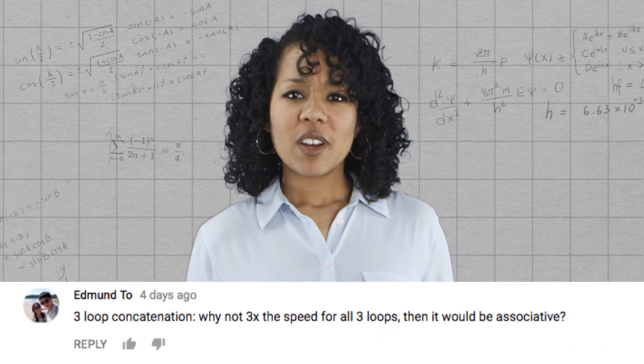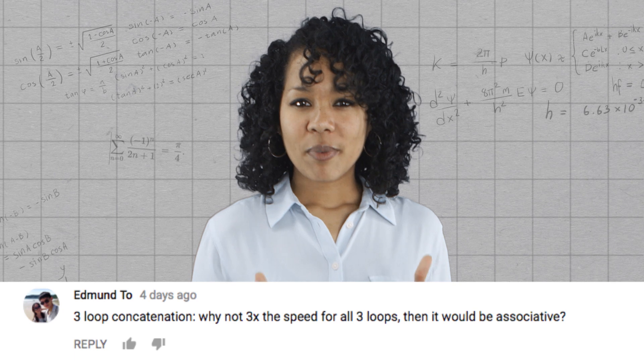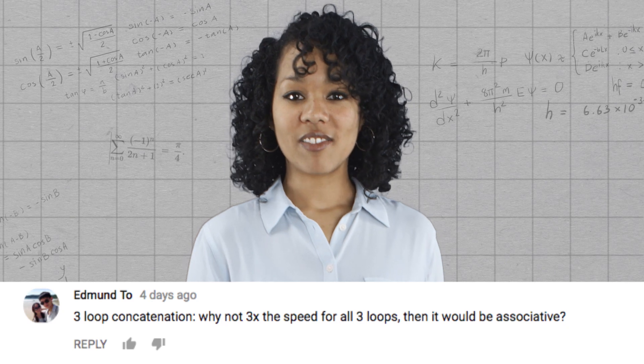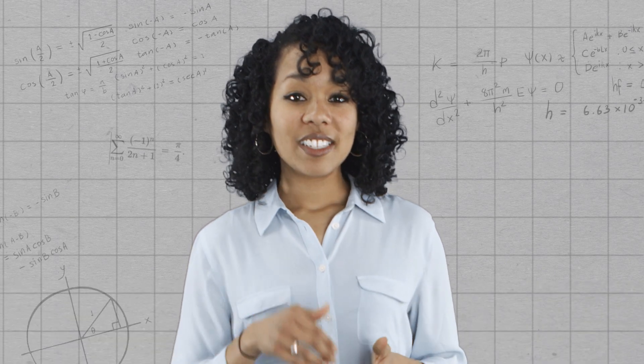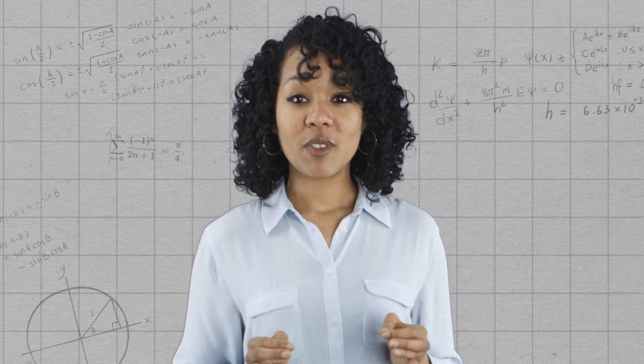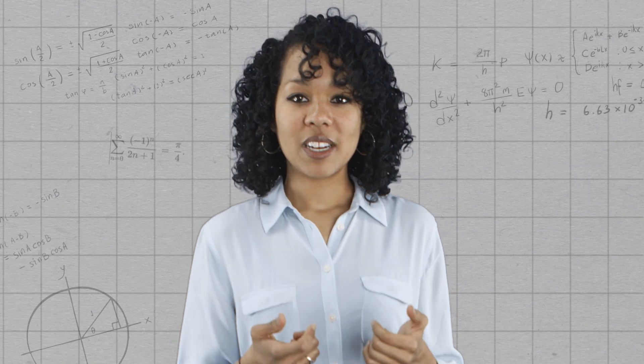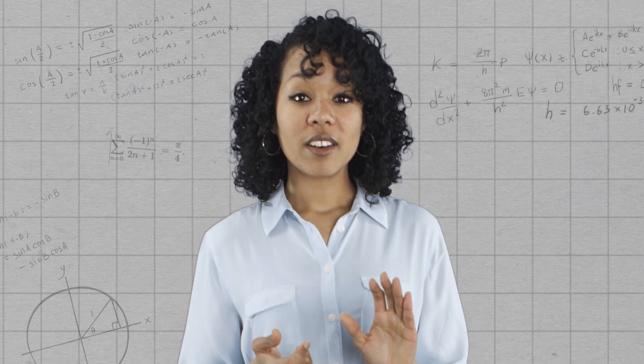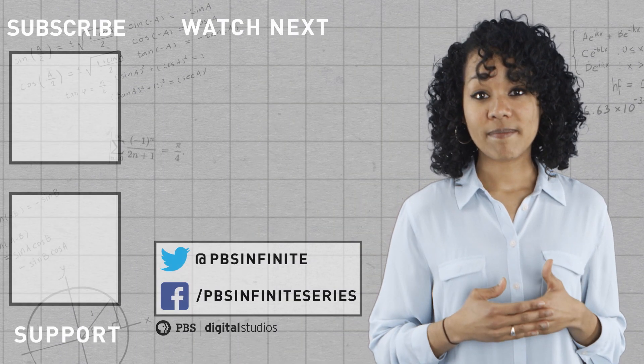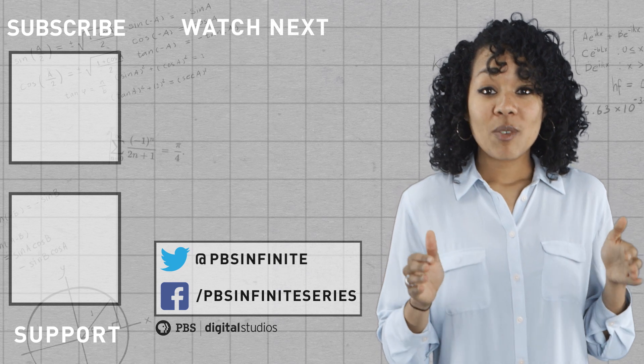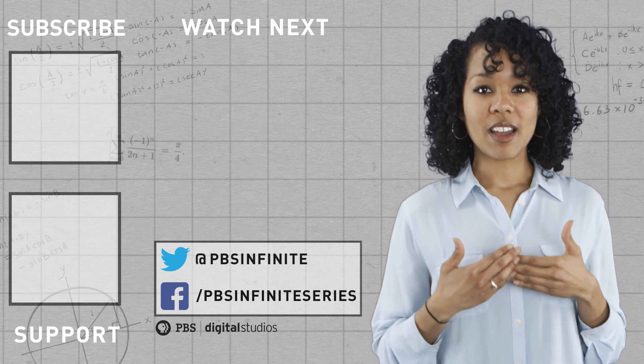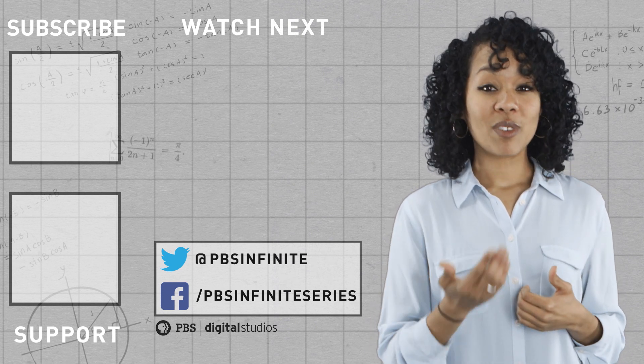In the previous episode, why didn't the product of three loops correspond to the picture where the three cars each travel at three times their original speed? As we saw in today's episode, there are actually infinitely many ways to multiply three loops, including the one where the interval is divided into thirds and each car travels at three times their original speed. However, that product is not obtained by applying the binary operation that we defined last time. In fact, out of all of the infinitely many ways to multiply three loops, only two of them are obtained by applying our binary operation. And those are the two that we focused on in the previous episode.